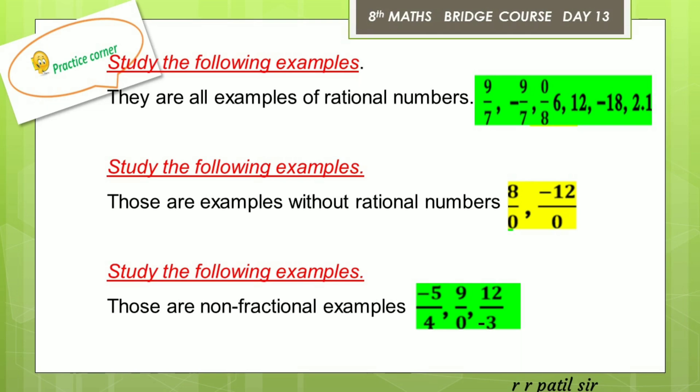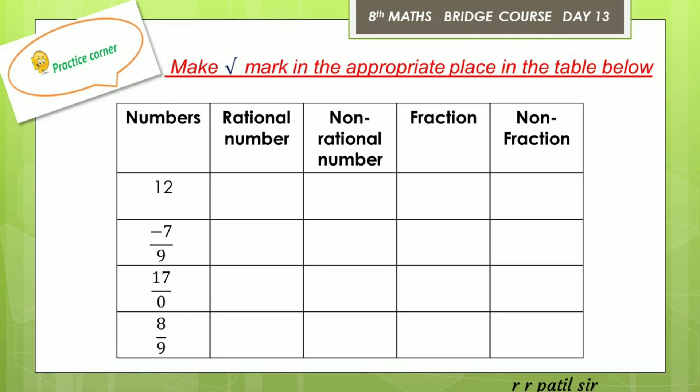Study the following examples of non-fractional numbers: minus 5 upon 4, 9 upon 0, 12 upon minus 3 — these are non-fractional examples. Now you have to solve a table: make a correct mark in the appropriate place in the table below. The table contains some numbers and options — rational number, non-rational number, fraction, and non-fraction.